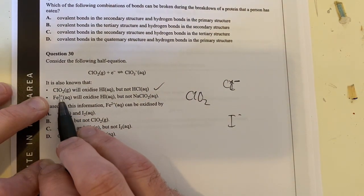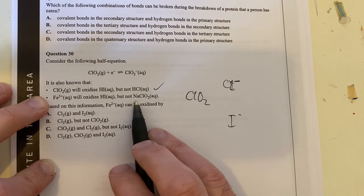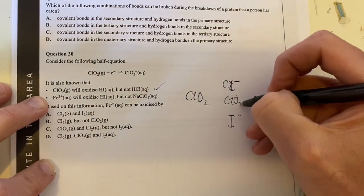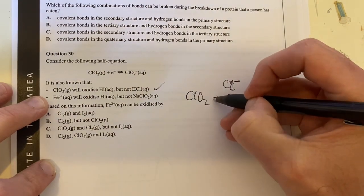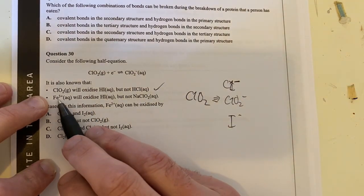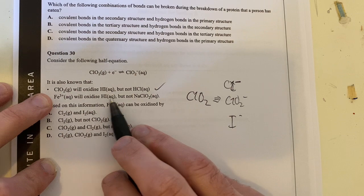And if I have Fe3 positive, it will react, and it means we've got the ClO2 negative here, based on this equation here, so I've got this one here. So therefore, Fe3 positive will oxidize that, but not that.